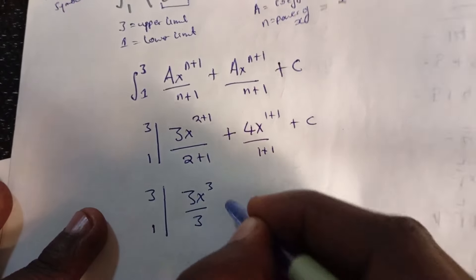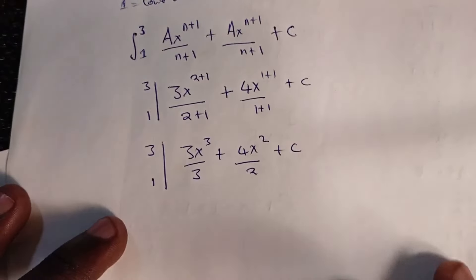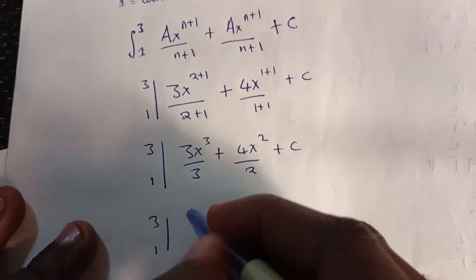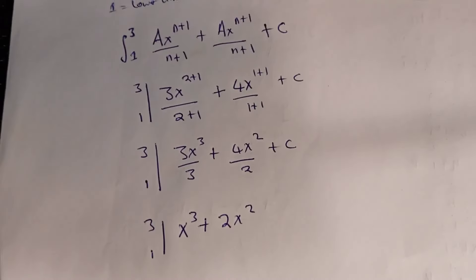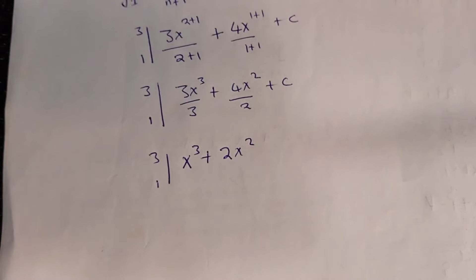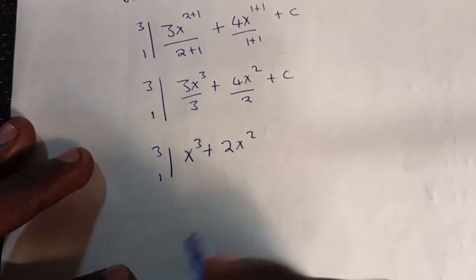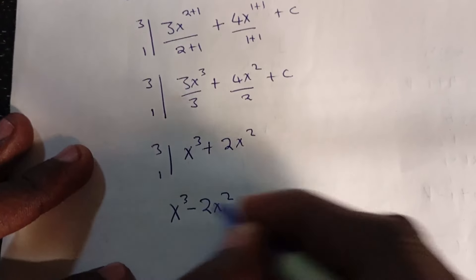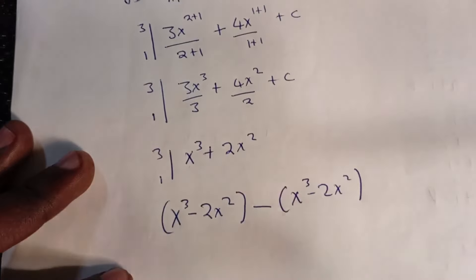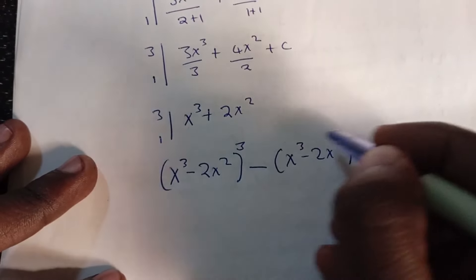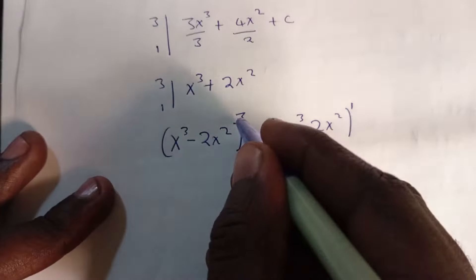Simplifying: 3x³/3 = x³ and 4x²/2 = 2x². So the integrated expression is x³ + 2x². We now apply the limits — writing it as [x³ + 2x²] evaluated from 1 to 3. We substitute the upper limit 3 and subtract the result of substituting the lower limit 1.